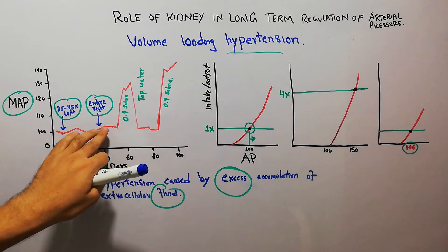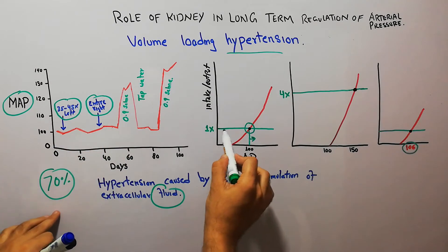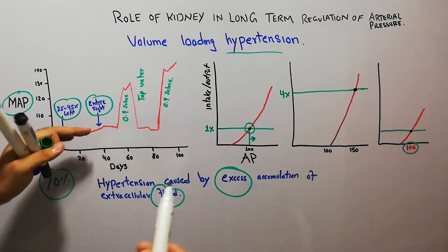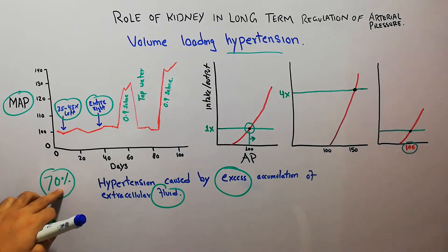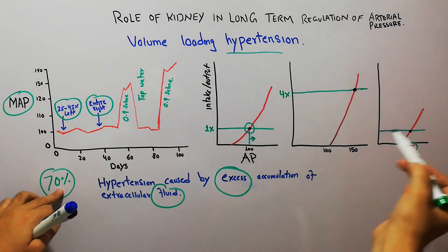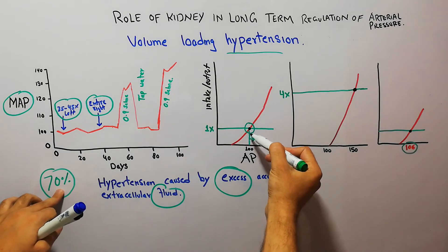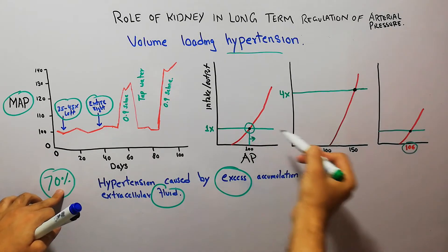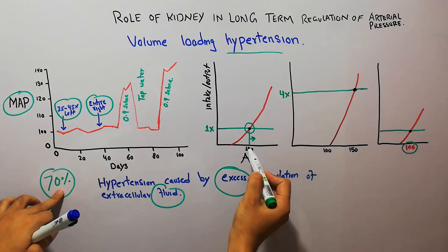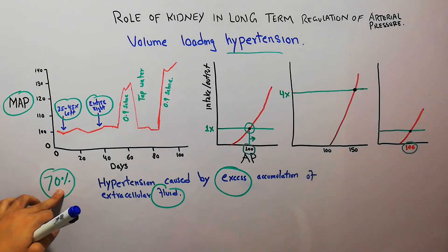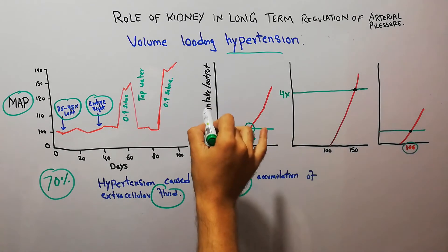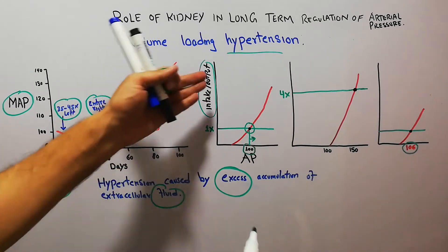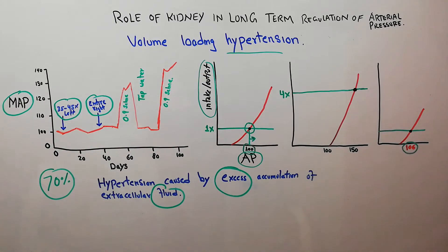At this point, the intake of salt and water has not been changed, but kidney function has been manipulated by removing the kidneys so they cannot properly excrete excess water or fluid. When renal functions are disturbed, it leads to a slight increase in arterial pressure from the normal 100 mmHg to 106 mmHg. These graphs show intake and output on the y-axis and arterial pressure on the x-axis.